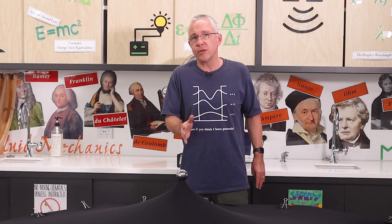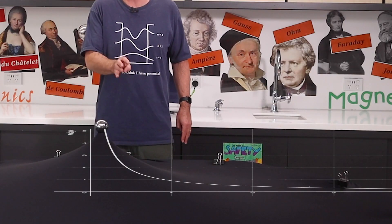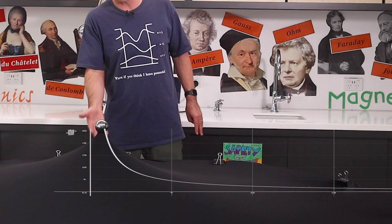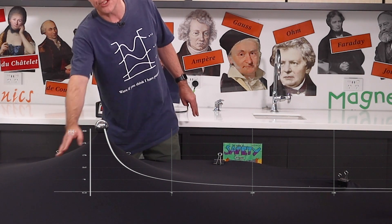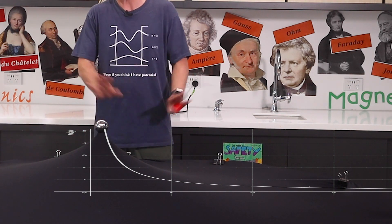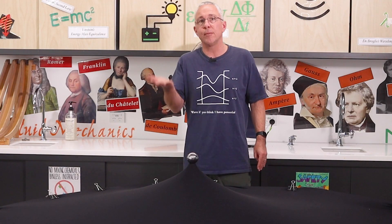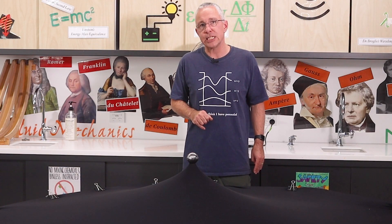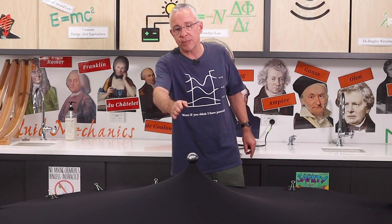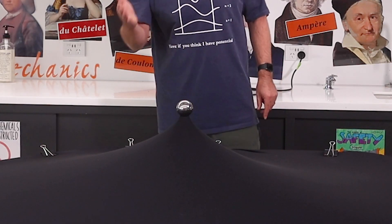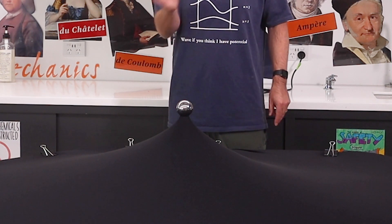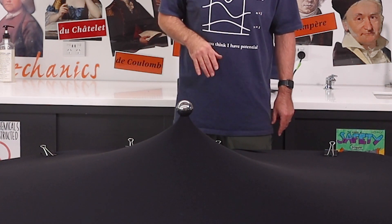The voltage is represented by the height that the ball sits above the surface. The surface is zero, so the voltage anywhere along the surface from the level of the ring is going to be a positive value because we are moving upward. The slope represents the electric field strength, so the electric field is much stronger here because the slope is much steeper. To summarise: height is voltage, and the slope or gradient of the surface is the electric field strength.